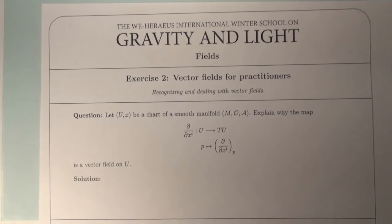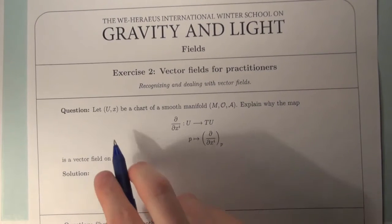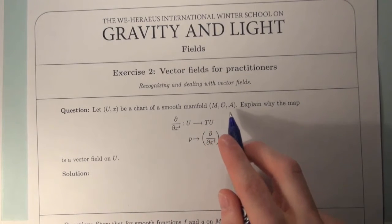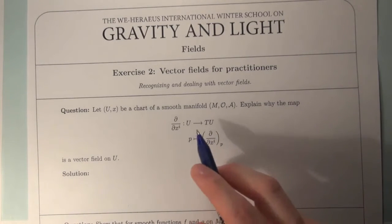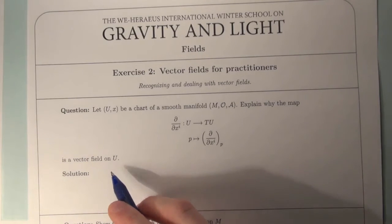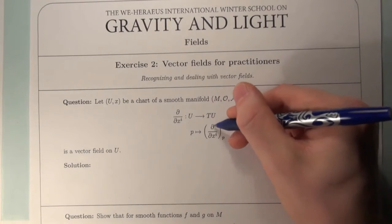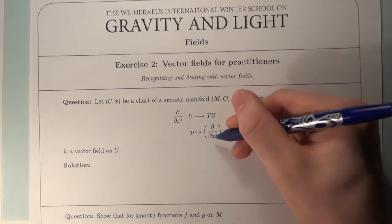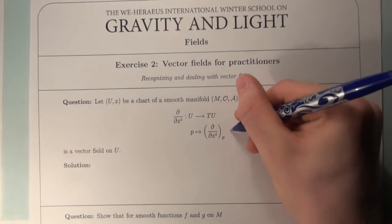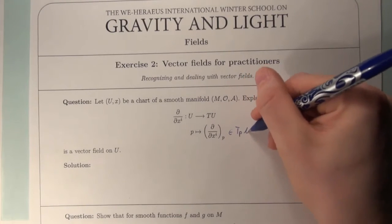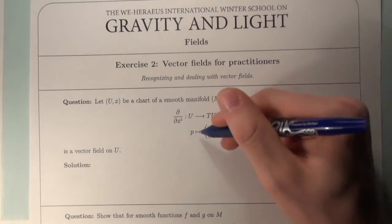Exercise 2: vector fields for practitioners. Let (U, x) be a chart of a smooth manifold M and explain why the map that assigns to each point P the basis vector del/del x^i at P — which lies in TpM — is a vector field on U.